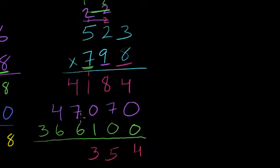And then we have 1 plus 4 is 5, 5 plus 6 is 11, carry the 1. 1 plus 3 is 4. So 523 times 798 is 417,354.